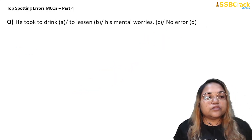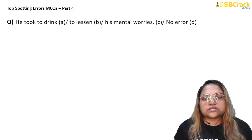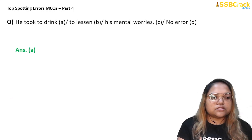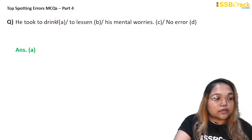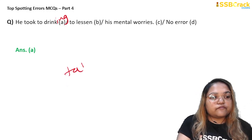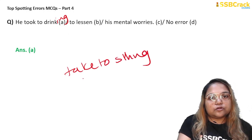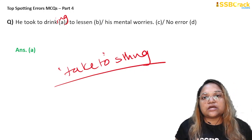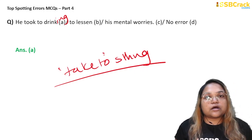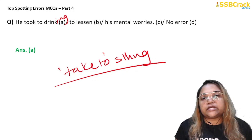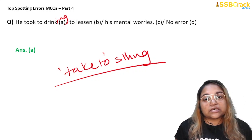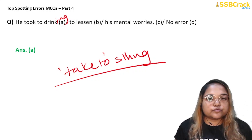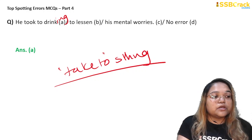Next question: 'He took to drink to lessen his mental worries.' Reading the sentence again, your ears will tell you the error is in part A — option A is correct. 'He took to drink' is wrong; it should be 'he took to drinking.' The phrasal verb 'take to' means to get addicted to something. After a phrasal verb like this, you always use a noun or a verb in its '-ing' form. So 'to drink' is wrong and must be changed to 'drinking.' Answer: option A.